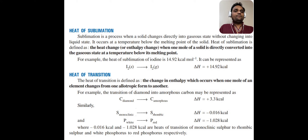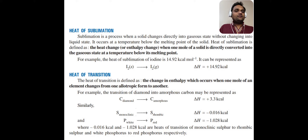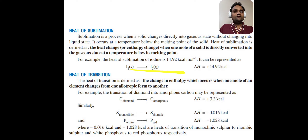For example, when iodine solid is converted into iodine in gaseous form, during that process there is a value of delta H equal to plus 14.92 kilocalories. The positive sign indicates that heat is absorbed during this conversion. So this delta H value is the heat of sublimation in this case.